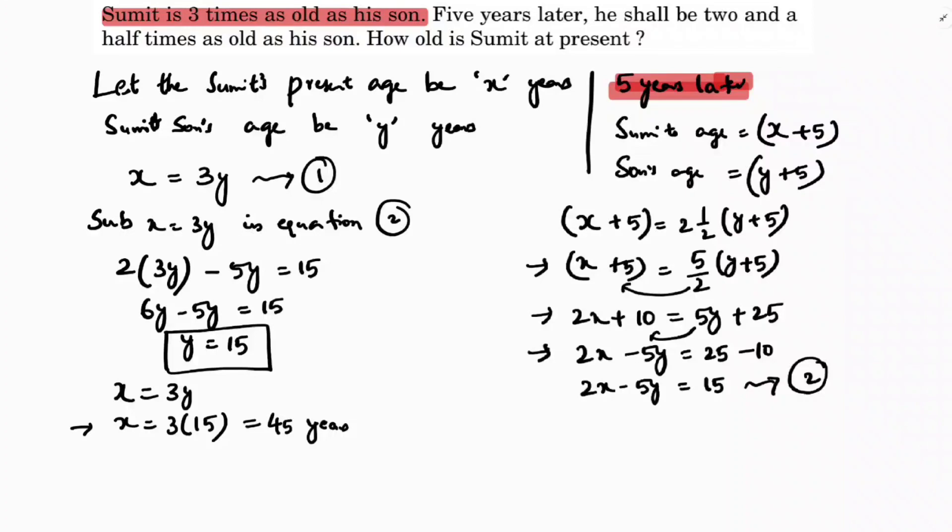In the question they're asking how old is Sumit at present? At present Sumit's age is 45 years. He is 45 years old, and son's age is 15 years.